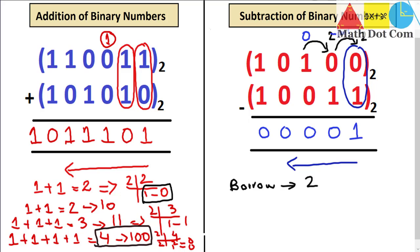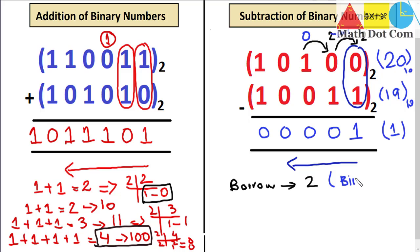To verify your subtraction, you should know binary-to-decimal conversion. The top number here is the binary equivalent of 20, and the number in the next row is 19 in decimal. Subtracting gives 1, and we also got 1 in our binary subtraction — so the answer checks out. Remember: borrow in binary gives you 2, while borrow in decimal gives you 10.